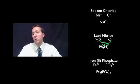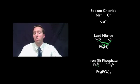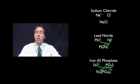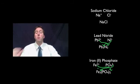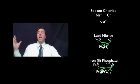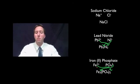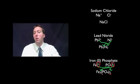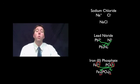For lead nitride: take the charge number 2 from Pb²⁺ and place it as the subscript for nitride, and take the charge number 3 from N³⁻ and place it as the subscript for lead. Lead nitride is therefore Pb₃N₂. The same criss-cross method for iron(II) phosphate gives the charge 2 going to the right as a subscript and the charge 3 going to the left as a subscript, giving Fe₃(PO₄)₂.